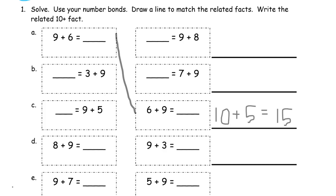Without even solving these, we can match some of them up. Three plus nine — we're looking for a nine plus three. There we go. Nine plus five — we're looking for a five plus nine. Eight plus nine — we're looking for a nine plus eight. And nine plus seven — we're looking for seven plus nine.